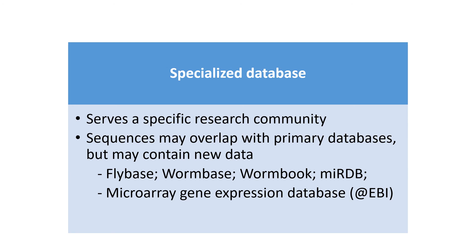So these are the general categories of biological databases: primary, secondary, and specialized databases. We will discuss these in more detail in our practical sessions. From the next lecture we will move towards sequence alignment. Please go through these databases, find some information about them, and we will discuss this in our Q&A and lab sessions. Till then, Allah Hafiz.